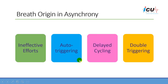We will be talking about four different types of asynchrony in relation to breath origin: ineffective efforts, auto triggering as a manifestation of a trigger mechanism problem, and delayed cycling and double triggering as manifestations of a cycling mechanism problem.